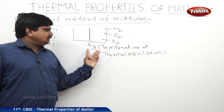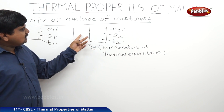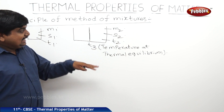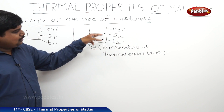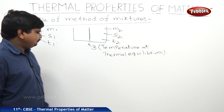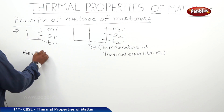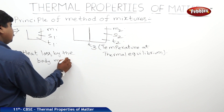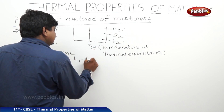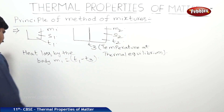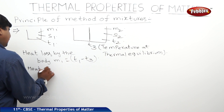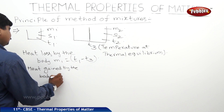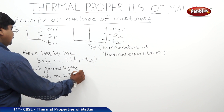Whenever the common temperature is T3, the heat lost by body M1 which is at temperature T1 is T1 minus T3. The heat gained by body M2 which has mass M2 and temperature T2 is T3 minus T2.